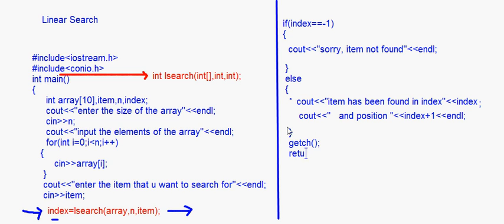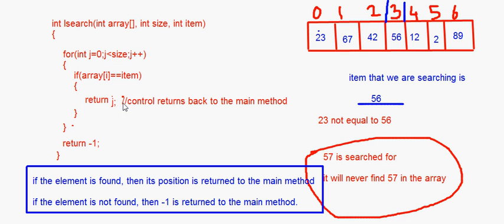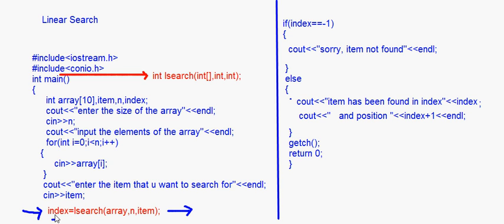We add a getch() and return 0 to finish the main function. That's all for linear search. Linear search is one of the basic search operations on arrays where you compare each and every element with the item being searched for. The key things to remember are: if array[j] equals equals item, return j; else return minus one; the lsearch function has return type int; and you catch the result in index. We'll do binary search in our next session.